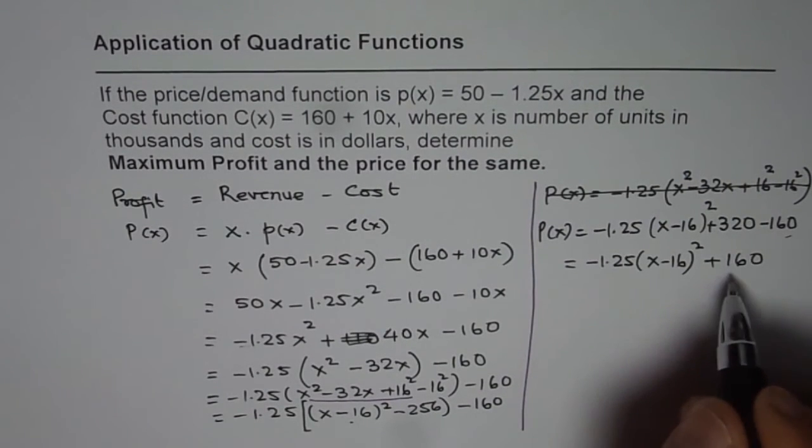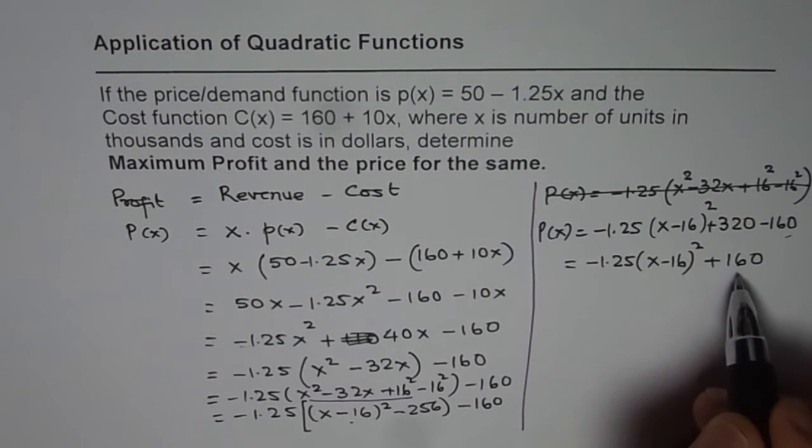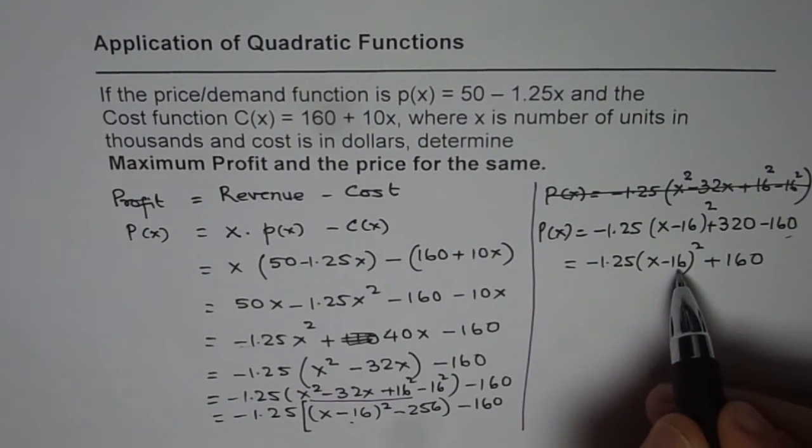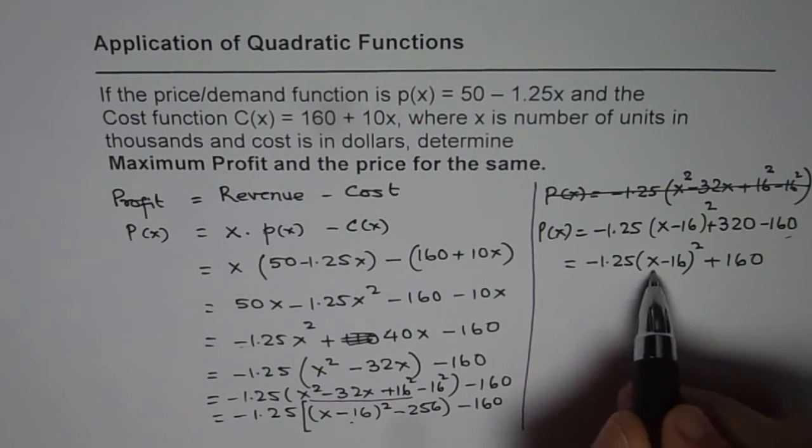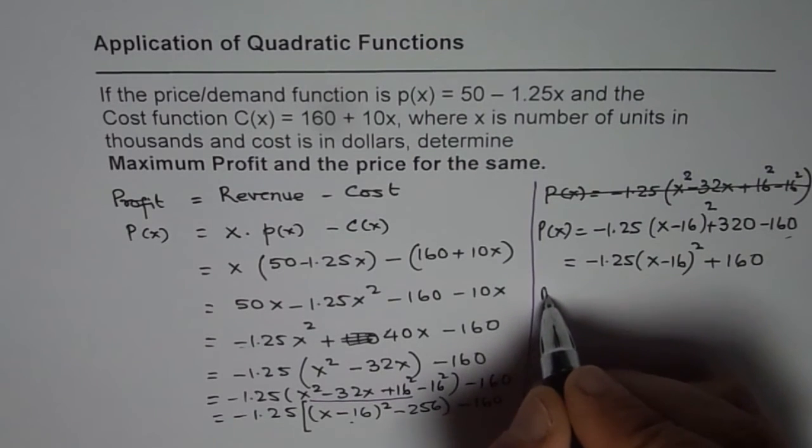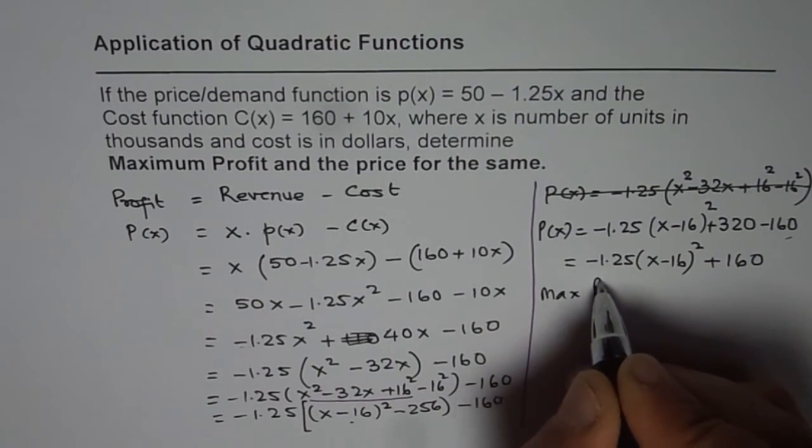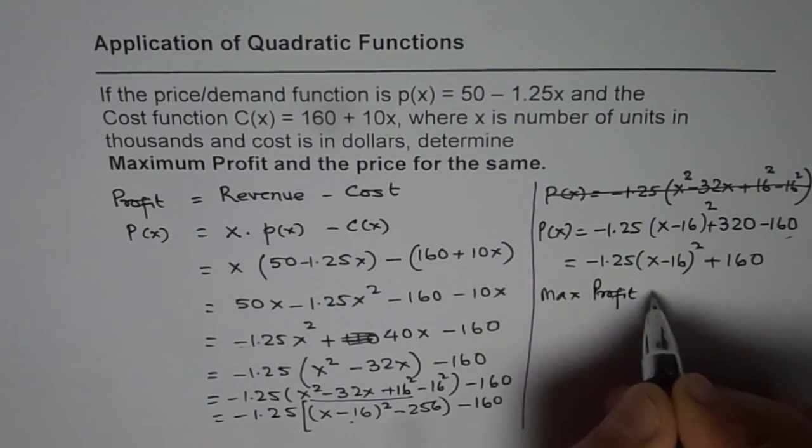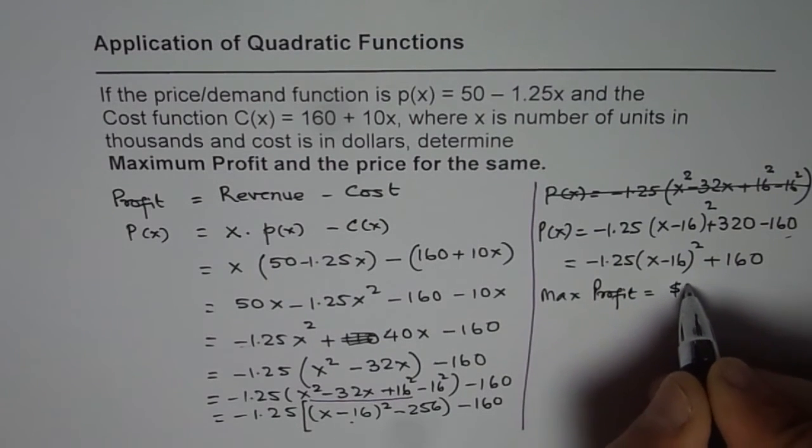So this vertex gives us the maximum profit, which is $160, and the number of items, which is when this part is 0, x equals to 16. So maximum profit is $160.